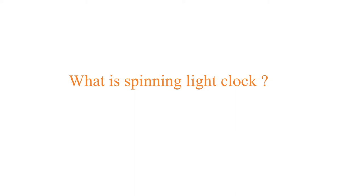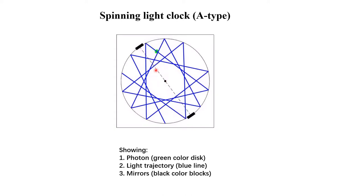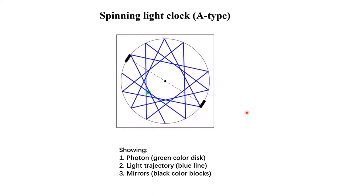What is a spinning light clock? Here we show an example of an A-type spinning light clock. The two mirrors rotate around a common point called the center. The center is here, and the distances between the center and the two mirrors are the same. The two mirrors move along the same circular trajectory. In this video, the photon is marked by the green disk, the light trajectory by the blue line, and the mirrors by black blocks. This pattern constructs a light clock, and we call it an A-type spinning light clock.